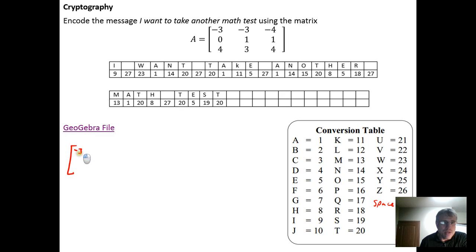In this case it's a 3 by 3 matrix: -3, -3, -4, 0, 1, 1, 4, 3, 4. It has to be a square matrix and it needs to have an inverse. The inverse of the encoding matrix must exist. Then what you do is you take the message, the numeric form of the message, and you put it in matrix form.